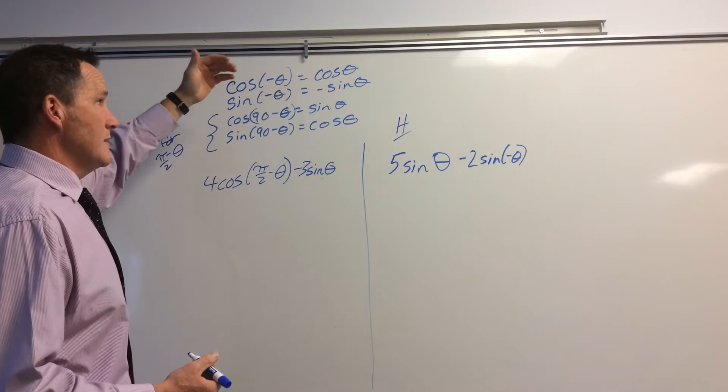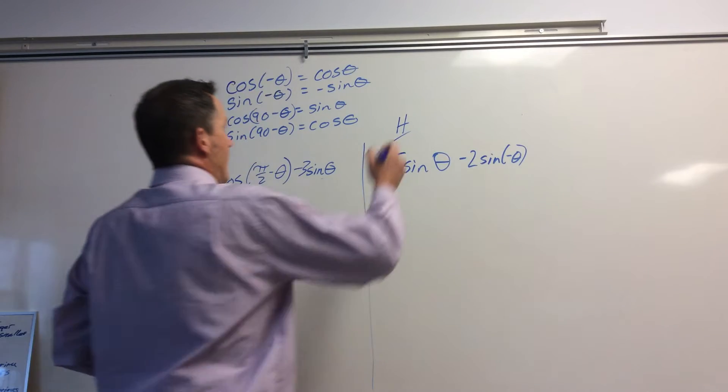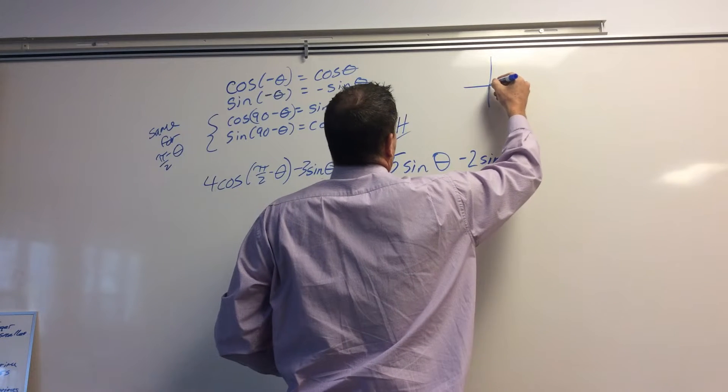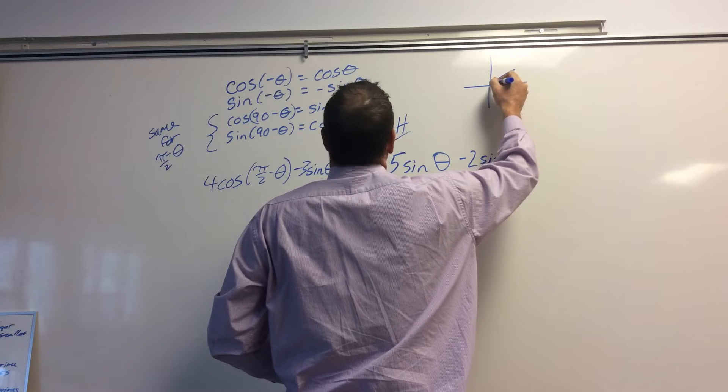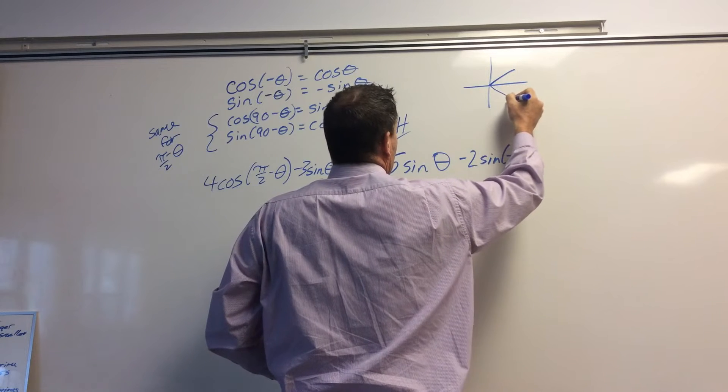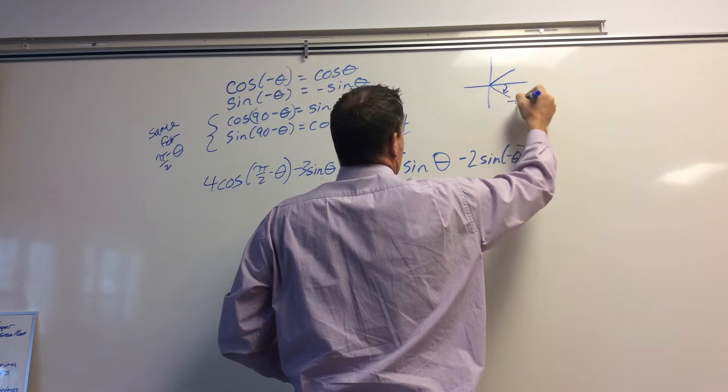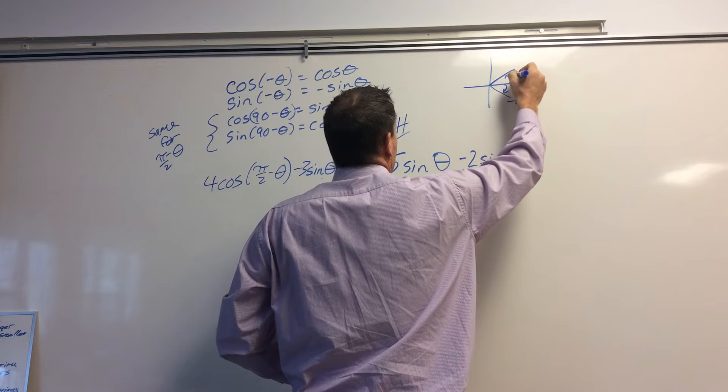So we have cosine negative theta is the same as cosine theta. Where does that come from? If you look at the unit circle, if this is cosine negative theta down here, this is positive theta. That angle is negative theta, that angle positive theta.